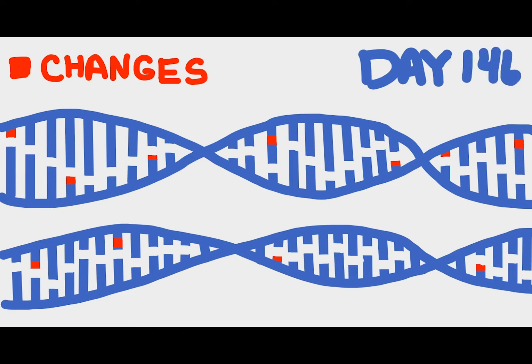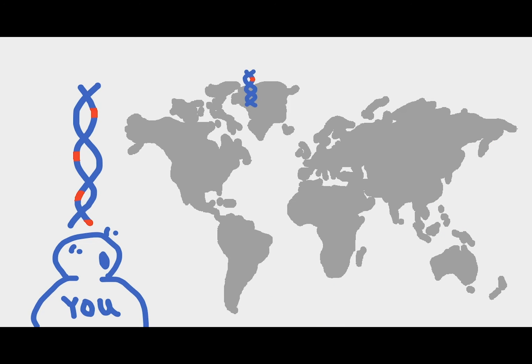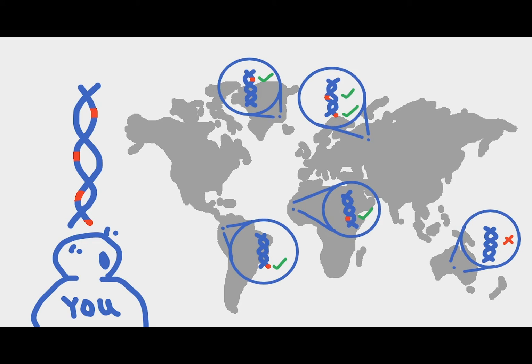Rather, these misspellings are used as identity markers or genetic markers. As people live, we are all collecting misspellings in our DNA, and genomic scientists use these misspellings as markers for a range of applications. This is how 23andMe finds your relatives and your ethnicity — they match your SNPs with other people's SNPs around the world.